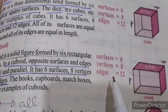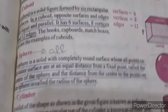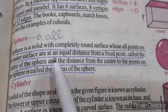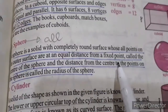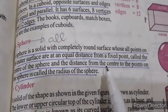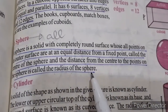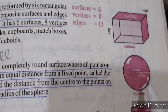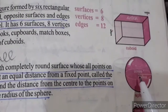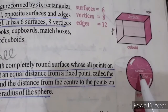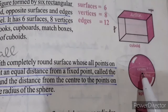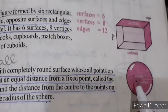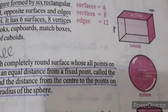Now come to our next definition: a sphere. A sphere is a solid with a completely round surface whose all points on its outer surface are at an equal distance from a fixed point called the center. The distance from the center to any point on the outer surface is called the radius of the sphere.